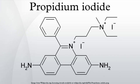Propidium iodide is an intercalating agent and a fluorescent molecule with a molecular mass of 668.4 daltons that can be used to stain cells. When PI is bound to nucleic acids, the fluorescence excitation maximum is 535 nm and the emission maximum is 617 nm.